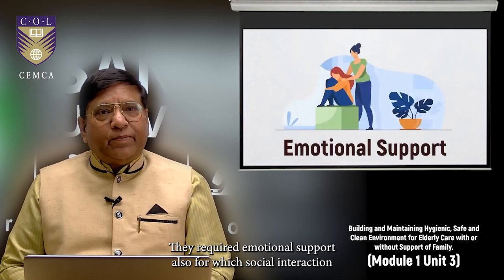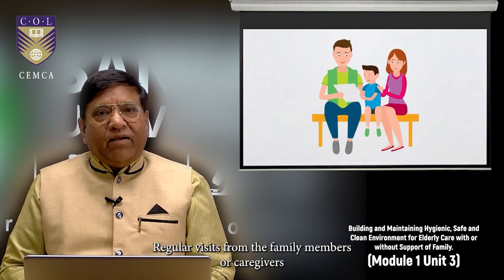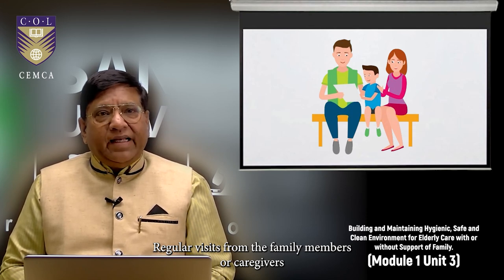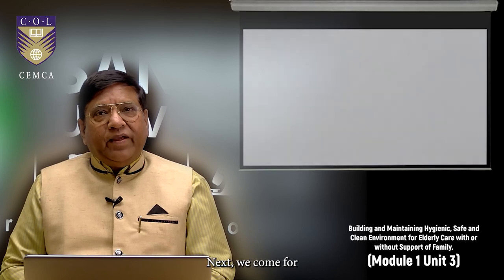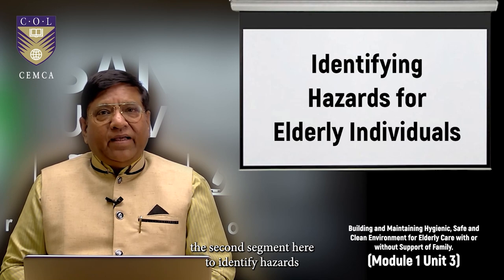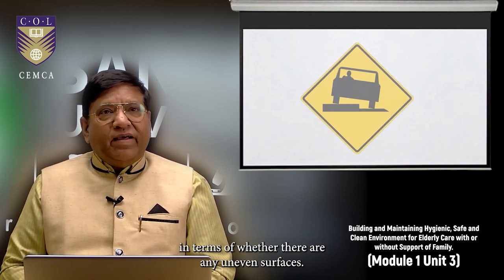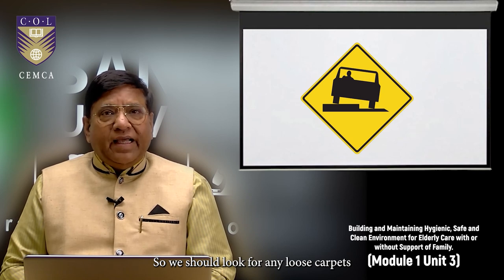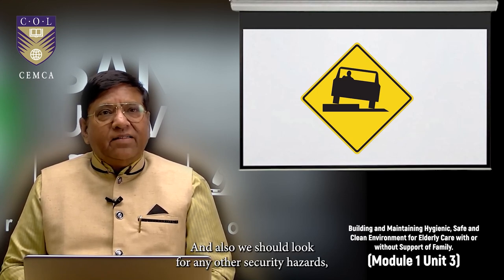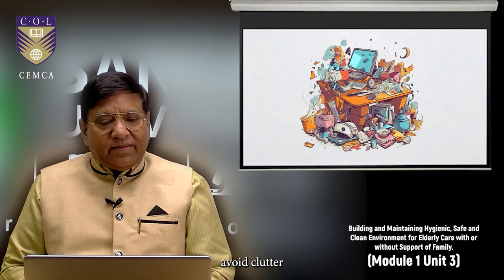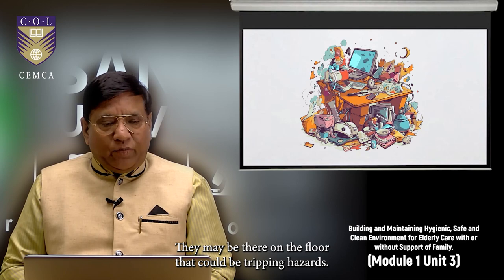They require emotional support also for which social interaction and family involvement is also recommended. Regular visits from the family members or caregivers to offer companionship and support is the requirement of the elderly people. Next, we come for the second segment here to identify hazards for elderly individuals. We have to identify hazards in terms of whether there are any uneven surfaces. We should look for any loose carpets or any uneven surfaces on the floors and also we should look for any other security hazards. Avoid clutter. Identify and remove objects which clutter the surroundings. They may be there on the floor that could be tripping hazards.